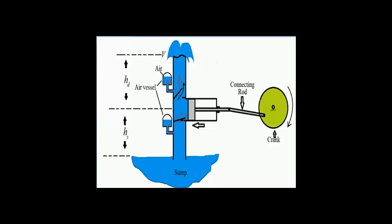So when we use an air vessel in this system, we can achieve continuous flow through the reciprocating pump. When we are not using an air vessel, the motion is not continuous — it is intermittent — because when the delivery valve is closed, there is no water flow to the reservoir. When we use an air vessel, it makes the flow continuous even when the delivery valve is closed. Thank you for listening to this lecture.